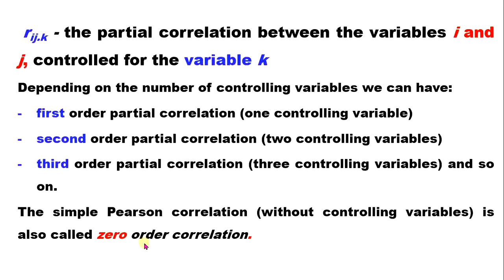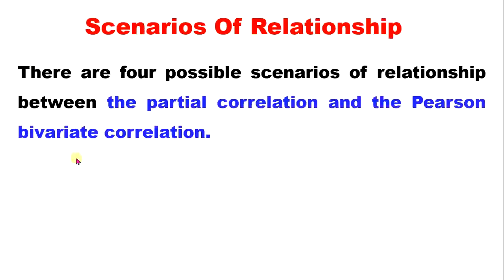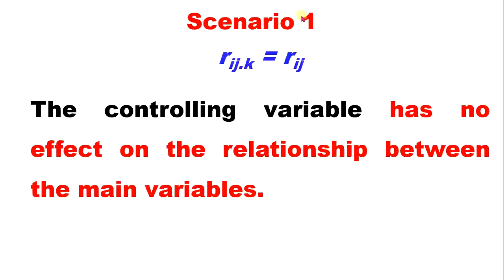There are four possible scenarios of relationship between the partial correlation and the Pearson correlation. Scenario one: the correlation between I, J, and K is equal to the correlation between I and J. This means the controlling variable K has no effect on the relationship between the main variables.